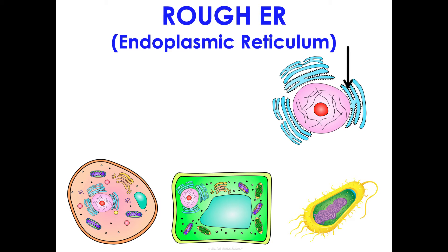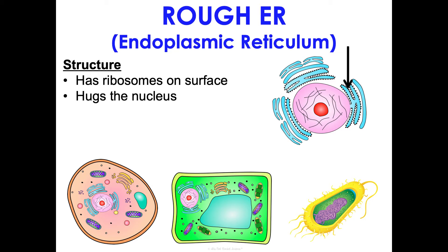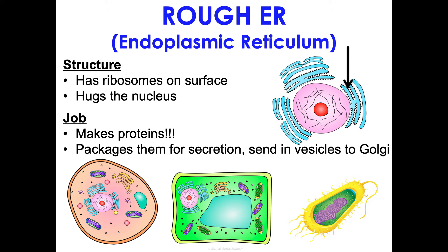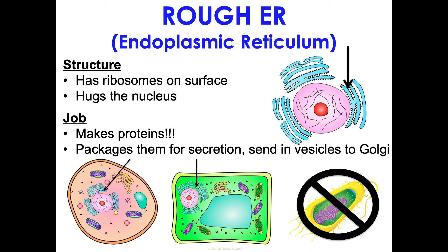The rough endoplasmic reticulum — rough ER — has ribosomes on its surface, which is what makes it rough. It hugs the nucleus, so you can always find it right around the nucleus. Its job is to make proteins. Recall from unit one that proteins have four levels of structure because they are so diverse and specific. Some of that folding and complex structure formation happens here, and then proteins get packaged for secretion and sent in vesicles to the Golgi. The rough ER is not in prokaryotes.